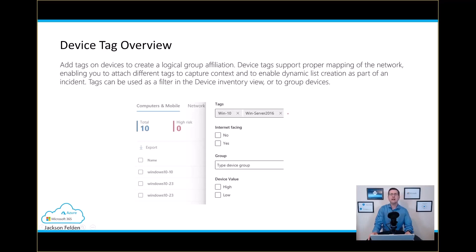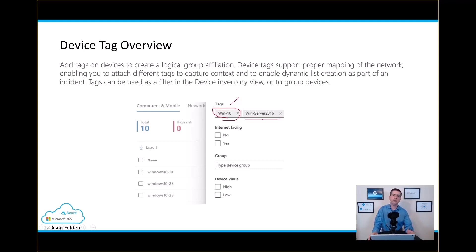You can use device tags to logically group devices together. I created a tag and a device group for all my Windows 10 devices, and then another tag and device group to represent my Windows Servers. When I want to see only what's happening with my Windows 10, I can easily filter by that. When getting reports from antivirus or threat and vulnerability management, I can get reports specifically based on my Windows 10 or Windows Server 2016.